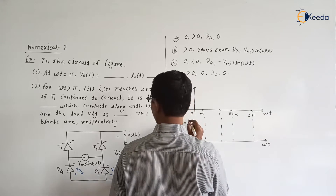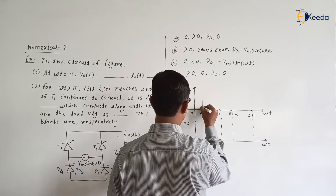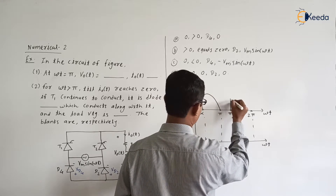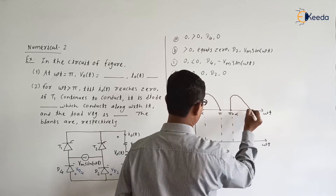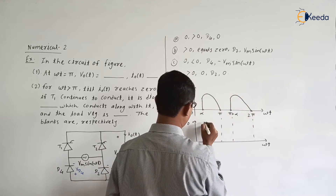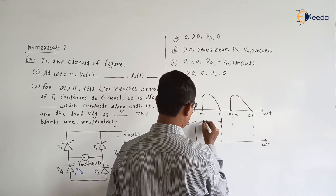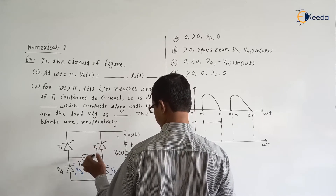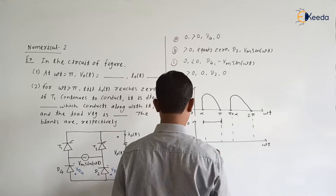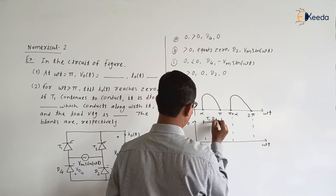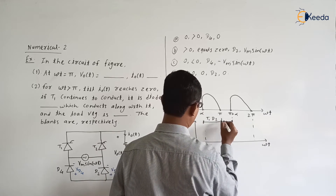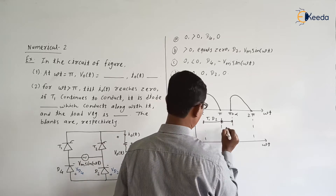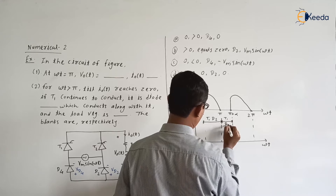The output voltage waveform is drawn accordingly. During alpha to pi, thyristor T1 and diode D2 conduct. From pi to pi plus alpha, whatever energy is stored by the inductor, the inductor releases the energy through D4 and T1. After that, from pi plus alpha to 2 pi, T2 and D4 conduct, and then T2 and D2 are in conduction mode.